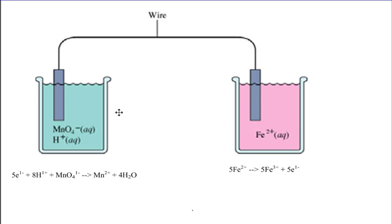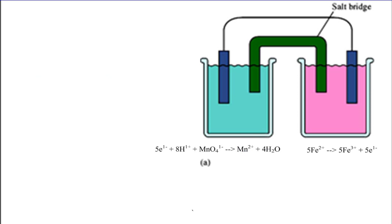And we accomplish this by using something that won't react with either reaction, but it will allow the electrical charges to balance out. And the device we use is what's called a salt bridge. The salt bridge is typically filled with some sort of agar or porous material that allows the ions that are trapped within it to flow from one solution to another.